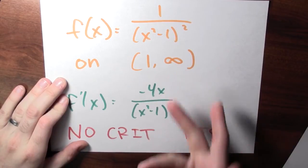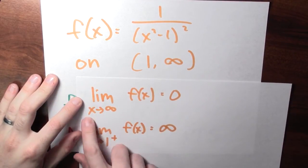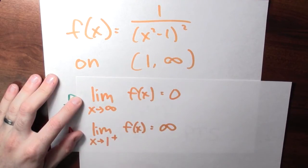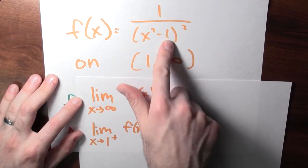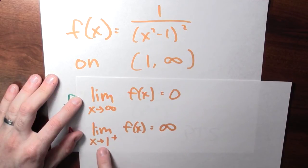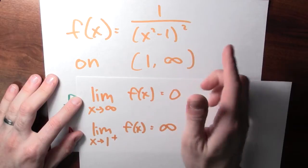What about the behavior near the boundaries? On the open interval from 1 to infinity, I should consider the limit as x approaches infinity and as x approaches 1 from the right. As x approaches infinity, the denominator grows without bound, so the limit is 0. As x approaches 1 from the right, the denominator approaches 0 from the positive side, making the ratio grow without bound — so the limit is infinity.